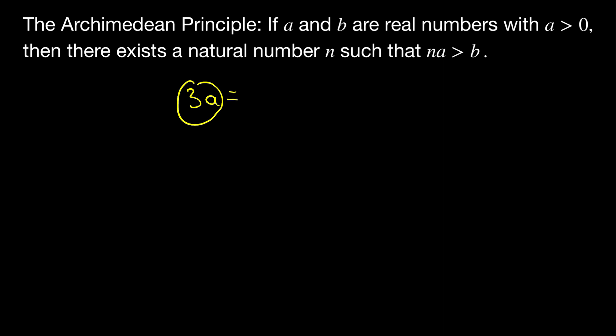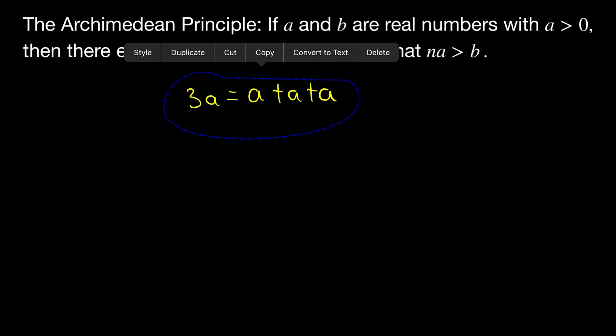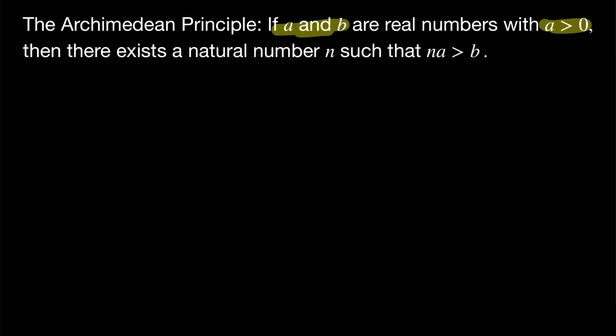For example, 3 times A is equal to A plus A plus A. So another way to think of this result is that if we have two real numbers A and B and A is positive, then we can add A to itself enough times to eventually surpass B. I think you'll agree that this is such an obvious fact that it's pretty cool we can actually prove it. So let's see how the proof goes.